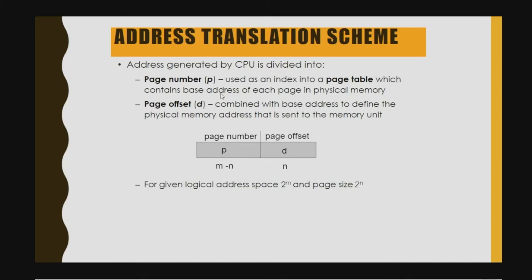The page table contains the base address of each page in physical memory, allowing translation from the logical to the physical address. The page offset combines with the base address to define the physical address sent to the memory unit. Page number p is derived from m minus n, and page offset is based on n. If given logical address space 2^m and page size 2^n, these formulas apply.